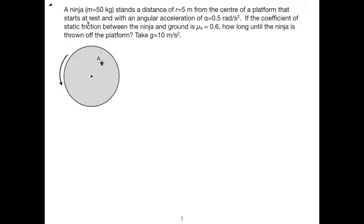I've been asked a couple times about this question, which describes a ninja standing a distance of five meters from the center of a platform that starts at rest and has an angular acceleration of half a radian per second squared. If we have a static friction between the ninja and the platform of 0.6, how long until the ninja is thrown off the platform?